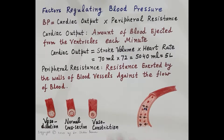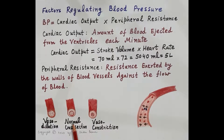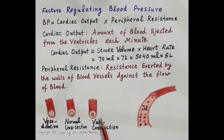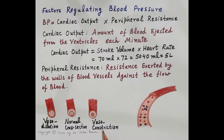Peripheral resistance depends upon the cross-section of the blood vessels. Here three blood vessels are shown: a normal blood vessel with normal cross-section, one where the lumen has been widened — termed vasodilation — and because of this widening, peripheral resistance falls. The third vessel has a narrowed lumen, termed vasoconstriction, and vasoconstriction increases peripheral resistance.